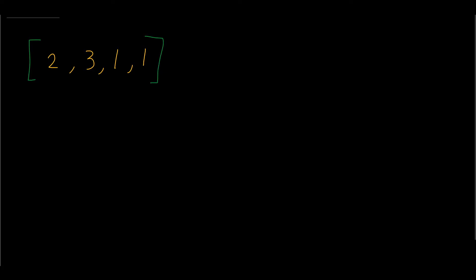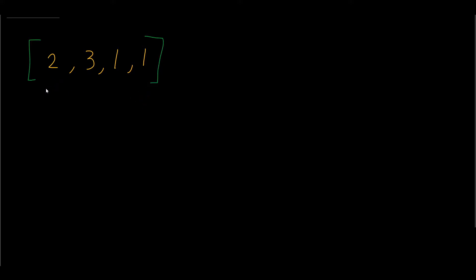At each number we want to check if we can see this number again in the array. To do this we need one pointer at the current number and another pointer to move through the array and check for a duplicate. For instance, we start at 2 and the other pointer checks: is 2 and 3 the same? No. Is 2 and 1 the same? No. Is 2 and 1 the same again? No. This pointer reached the end, so it's time to update both pointers.